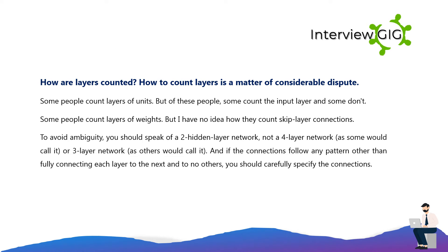How are layers counted? How to count layers is a matter of considerable dispute. Some people count layers of units — and of these, some count the input layer and some don't. Some count layers of weights but have no clear approach for skip-layer connections. To avoid ambiguity, you should speak of a '2 hidden layer network' rather than a '4-layer' or '3-layer' network. And if connections follow any pattern other than fully connecting each layer to the next, you should carefully specify the connections.